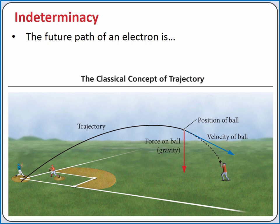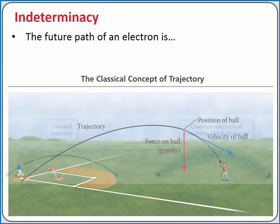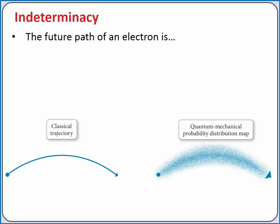Not so with an electron. The future path of an electron is indeterminate. It is not possible to know both the position and velocity of an electron. But we can consider the probability of finding an electron in a particular area. We'll call this a probability distribution map.